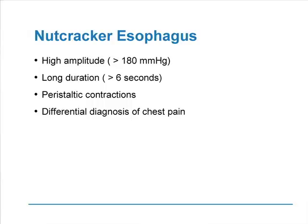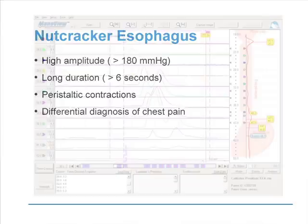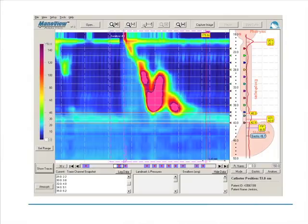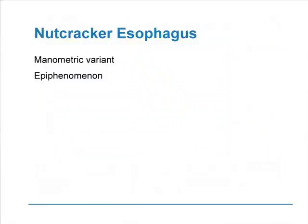Nutcracker esophagus, recognized about 20 years ago, is a manometric entity defined by high-amplitude contractions (greater than 180 mmHg on average in the distal esophagus) with duration over 60 seconds — but the contractions are peristaltic. Food does progress. Dysphagia is rare. Today there is general agreement that nutcracker esophagus is likely just a manometric variant, probably an epiphenomenon seen in patients with reflux, and as a standalone clinical entity it is not terribly important.